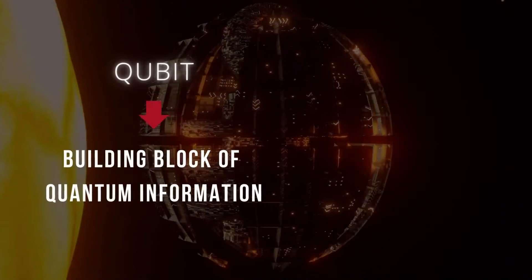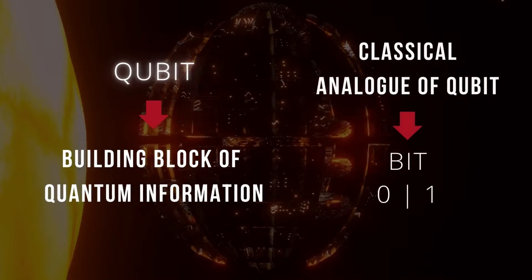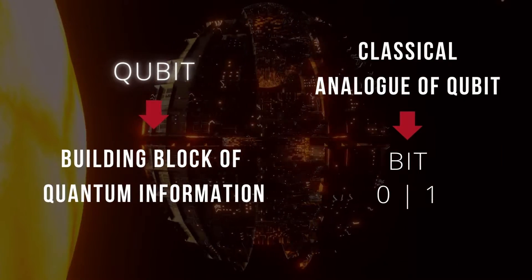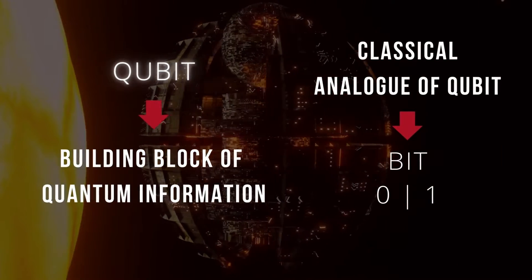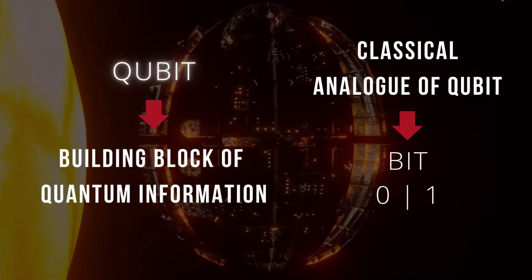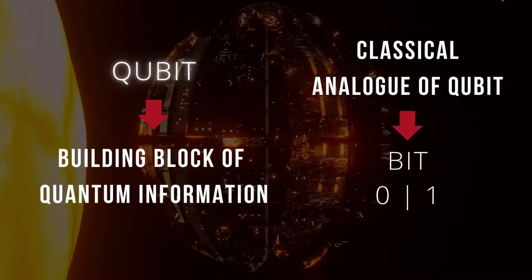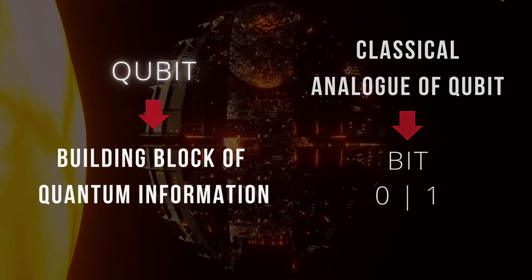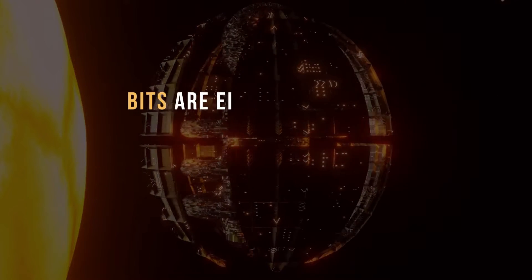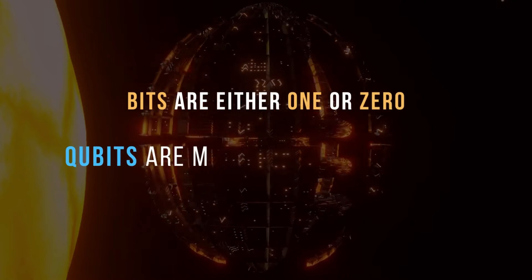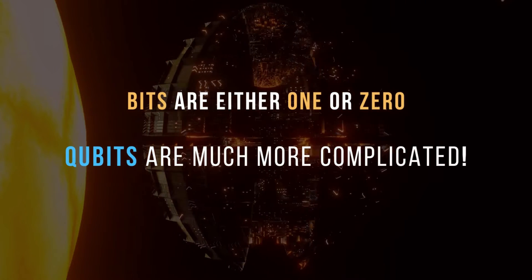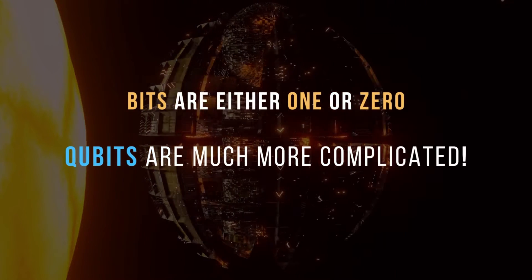A qubit, short for quantum bit, is a building block of quantum information. It is the quantum analog of the classical bit, which is the basic unit of information in classical computing.